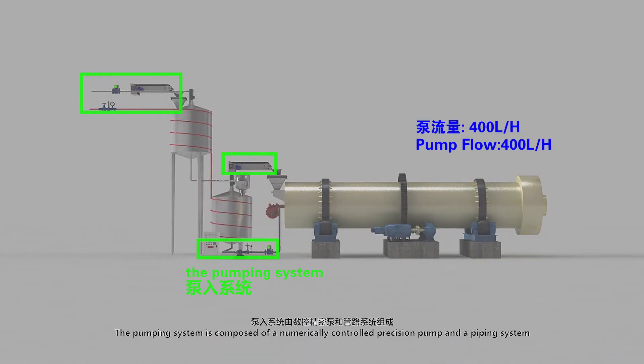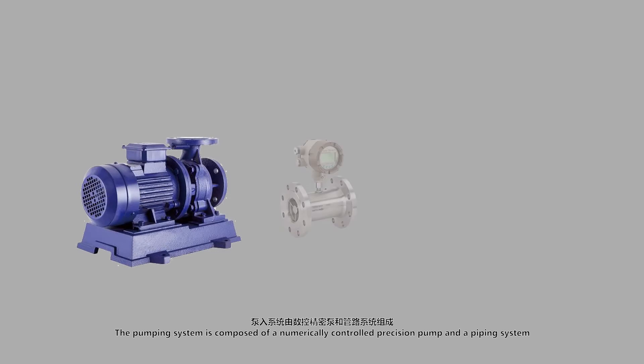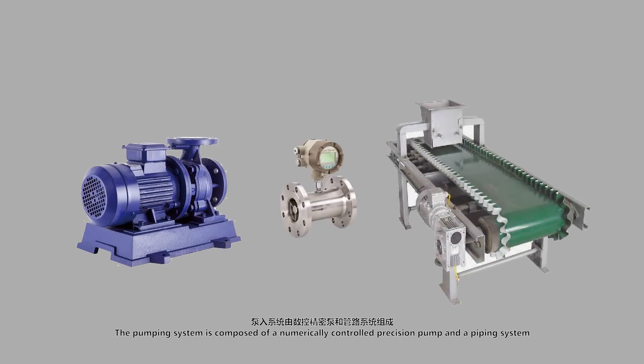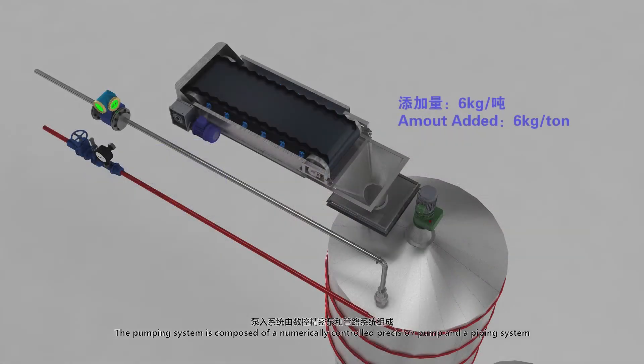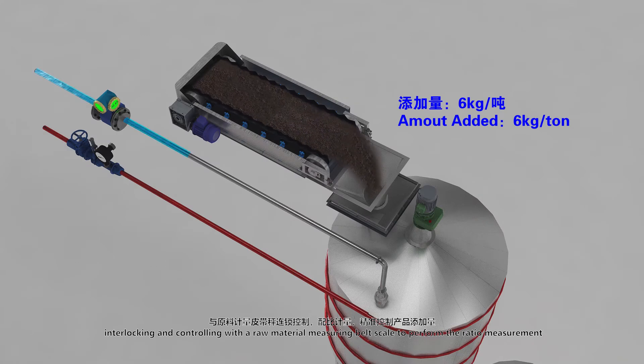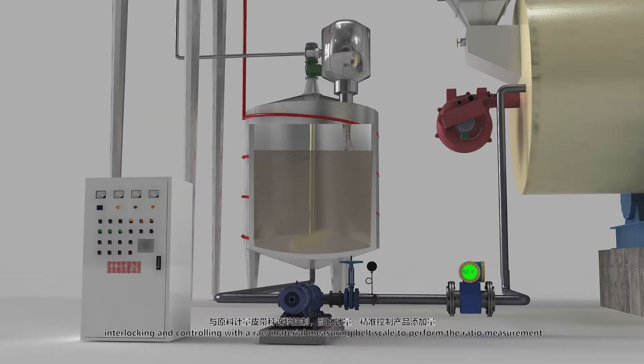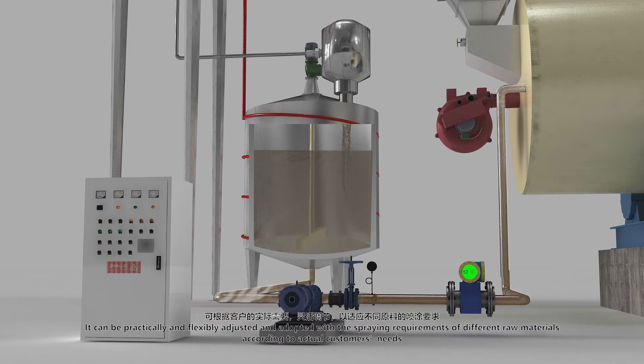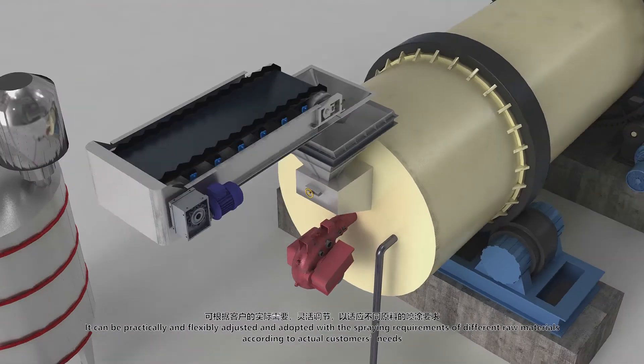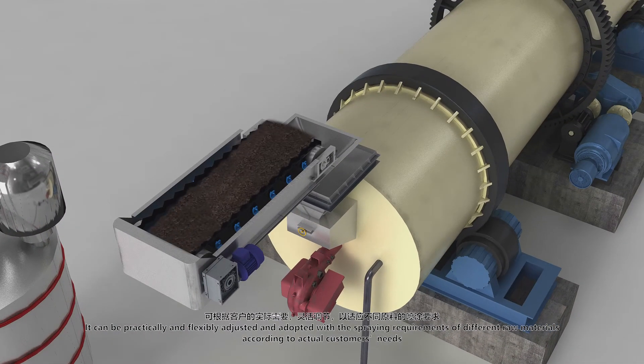The pumping system is composed of a numerically controlled precision pump and a piping system, interlocking and controlling with a raw material measuring belt scale to perform the ratio measurement. It can be practically and flexibly adjusted and adapted with the spraying requirements of different raw materials according to actual customers' needs.